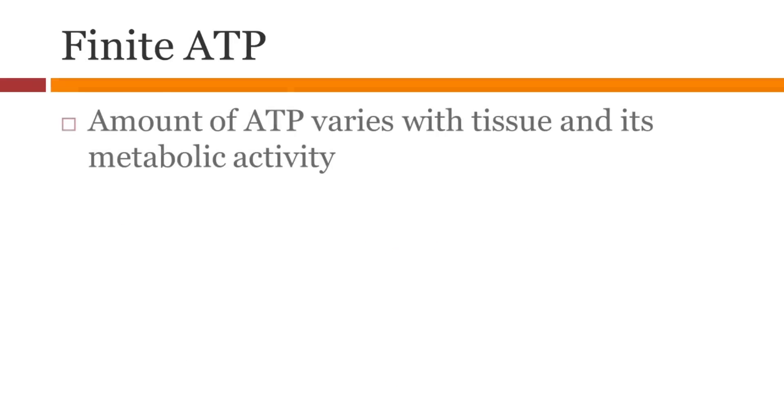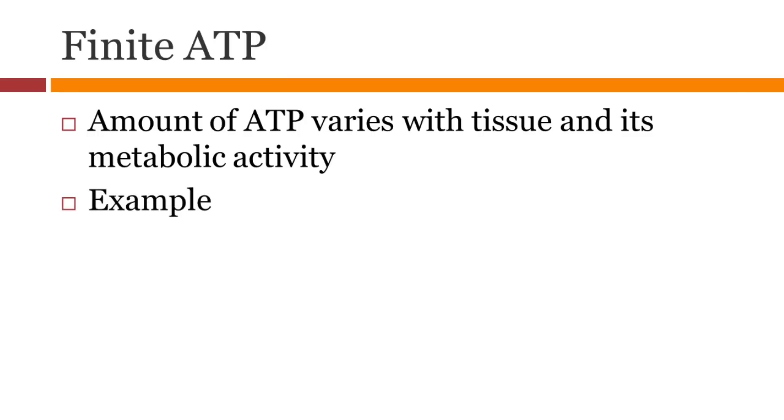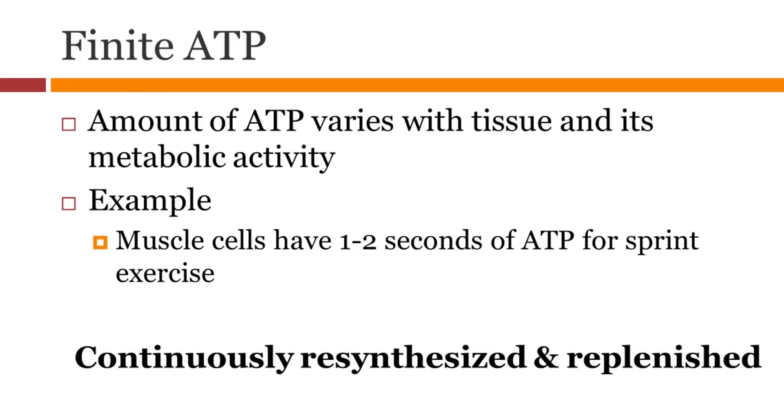Our body has finite amount of ATP. It varies based on the tissue and its metabolic activity. For example, if you were to start sprinting, you would be able to run for two seconds with the ATP present in your muscles. Therefore, ATP is continuously made and restored, resynthesized, and replenished.